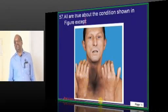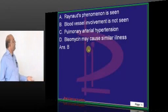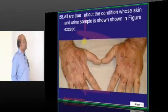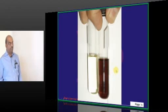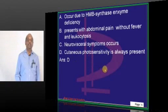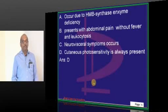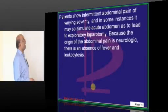What you are seeing is systemic sclerosis. Raynaud's phenomenon, pulmonary hypertension, and bleomycin causing a similar illness are all true statements. The cutaneous lesions along with port-wine stained colored urine is acute intermittent porphyria. You must know the enzyme involved, but importantly, cutaneous photosensitivity is not always present in acute intermittent porphyria — that is the carry-home message.